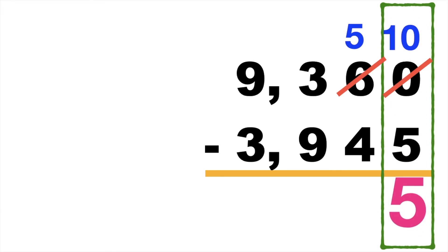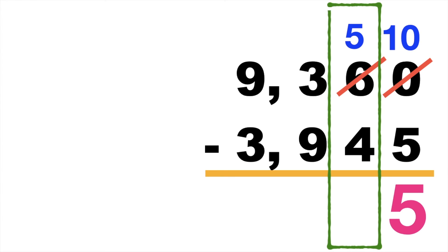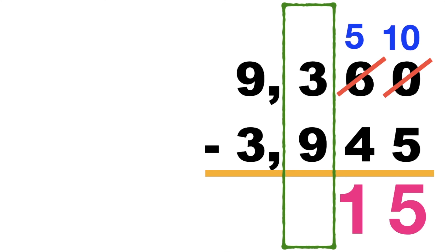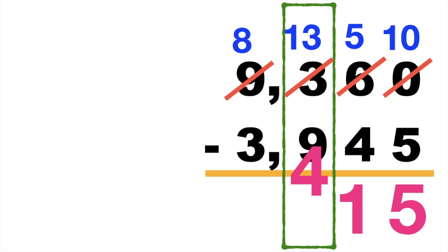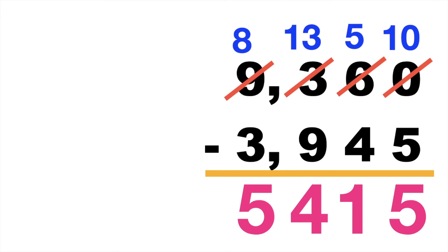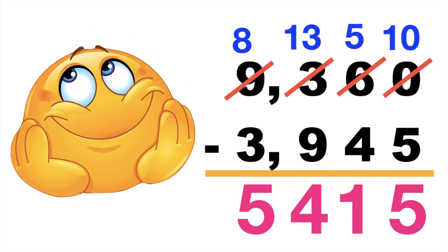Very good, it's 5. Then let's proceed to the tens place. 6 minus 4 is equal to 1. Then let's proceed to the hundreds place. 3 minus 9 — since 3 is smaller than 9, we're going to borrow 1 from 9. 9 will become 8, then 3 will become 13. 13 minus 9 is equal to 4. Then 8 minus 3 is equal to 5. So the difference is 5,415.